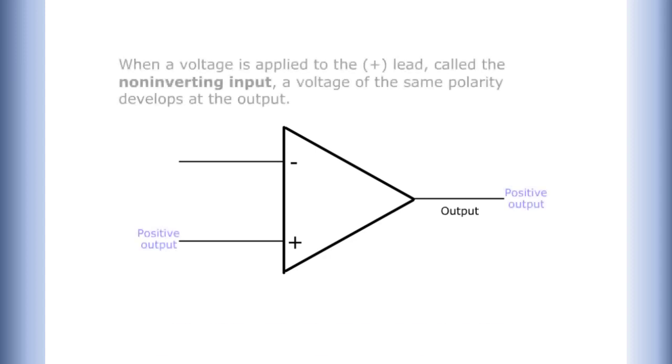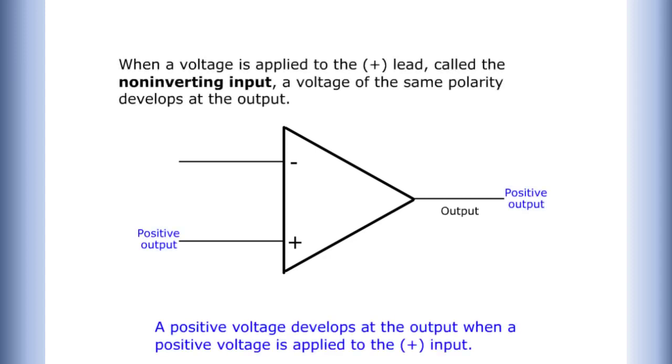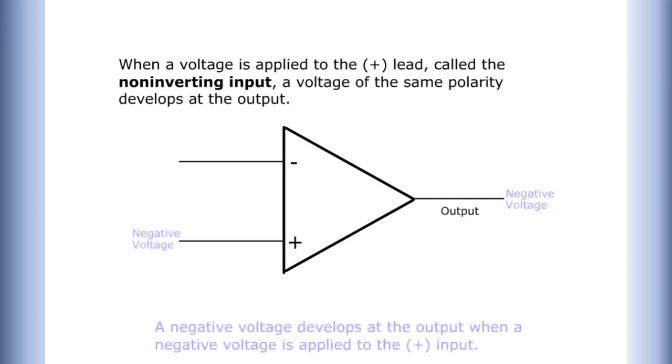When a voltage is applied to the lead called the non-inverting input, a voltage of the same polarity develops at the output. A positive voltage develops at the output when a positive voltage is applied to the input. A negative voltage develops at the output when a negative voltage is applied to the input.